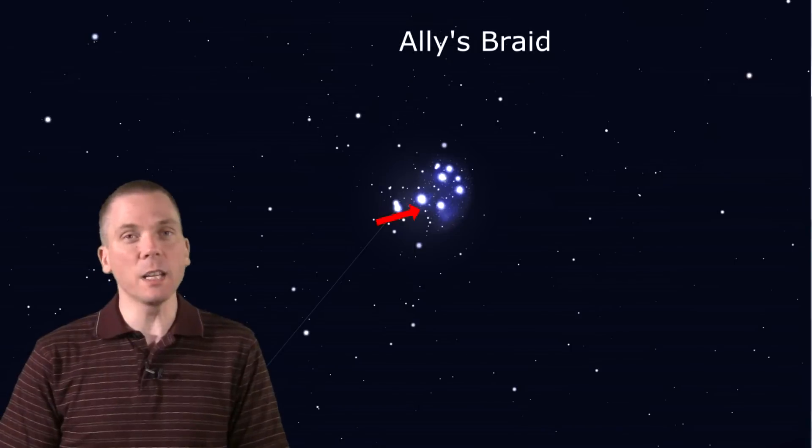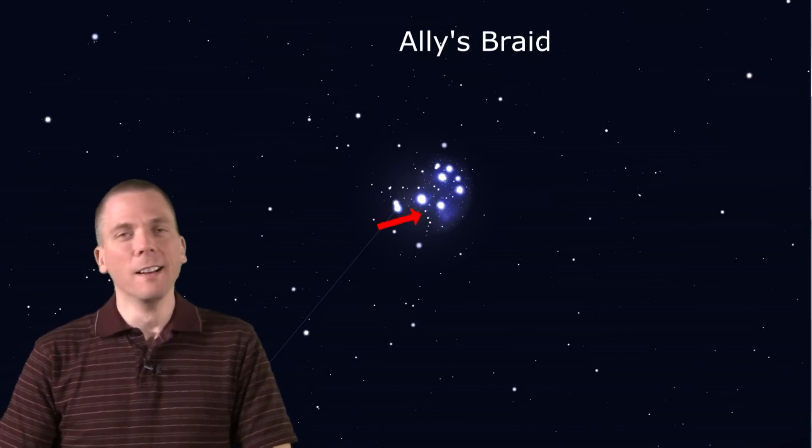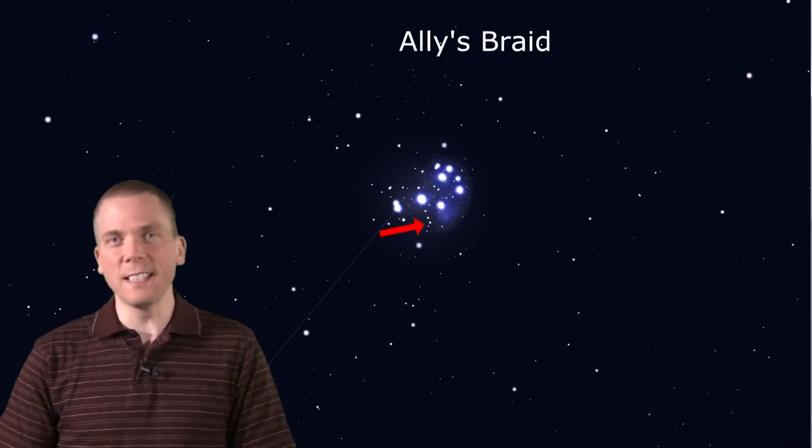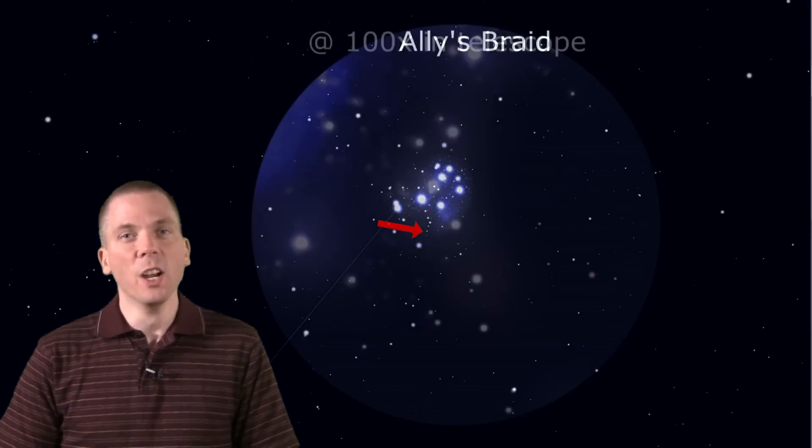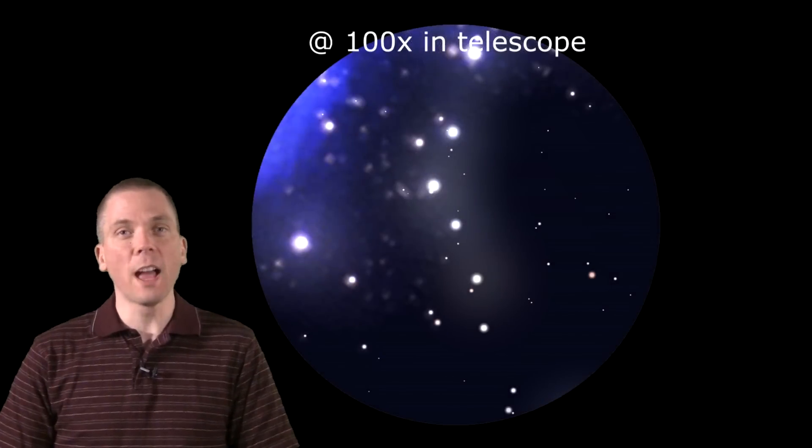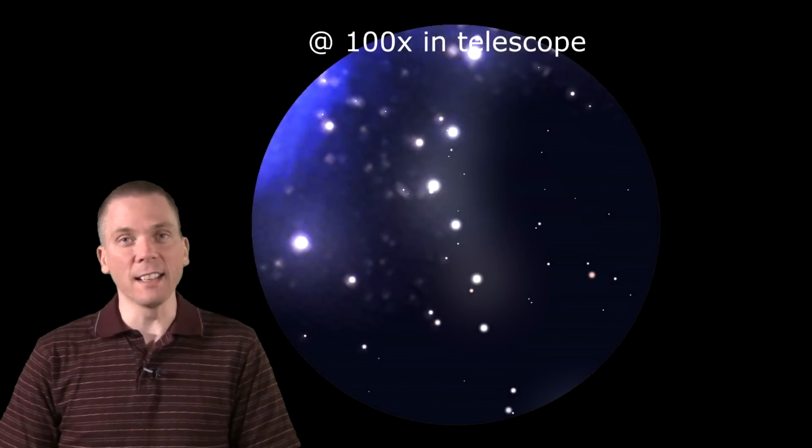This is known as Ali's Braid. This is a bit of a modern-day interpretation of these dimmer-than-naked-eye stars, referring to the hair of the nymph Alcyone, daughter of Atlas and Pleione.